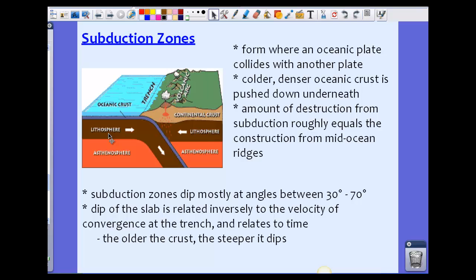We can look at that dip and compare it to the velocity or speed and relate that to time. The dip of this slab is related inversely to the velocity of convergence at the trench. There's an inverse relationship between the dip and the speed at which that convergence happens, and this relates back to time. Basically, the older the crust, the steeper it dips.